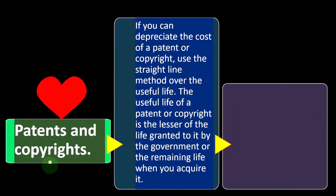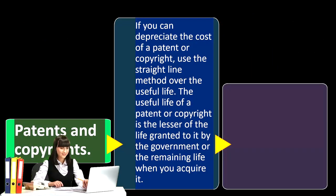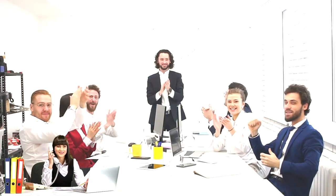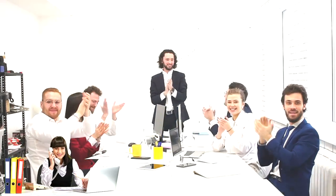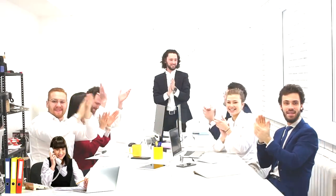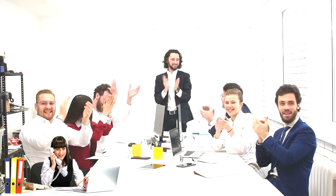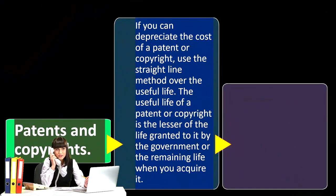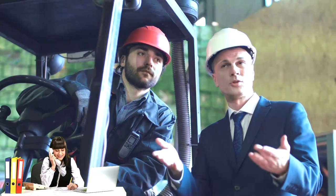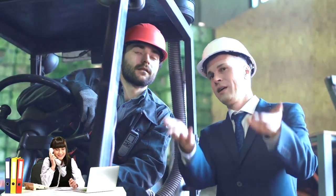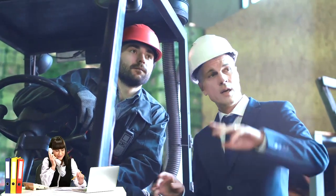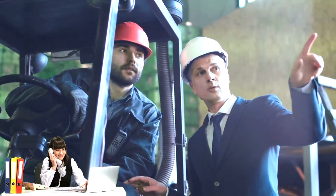Patents and copyrights are deviations from the normal MACRS rules, as mentioned in prior presentations. Most of the time when we talk about normal depreciable property — property, plant, and equipment — we put it on the books using MACRS rules. MACRS is going to be a format of double declining balance, usually with a half-year convention.